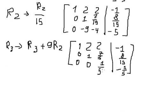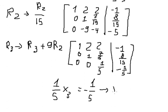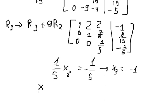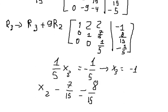After we calculate, we have one over five times s3 equals negative one over five. We divide both sides by one over five and get s3 equals negative one. Then for s2: s2 minus seven over fifteen times s3 — substituting s3 equals negative one — gives eight over fifteen, so s2 equals one.